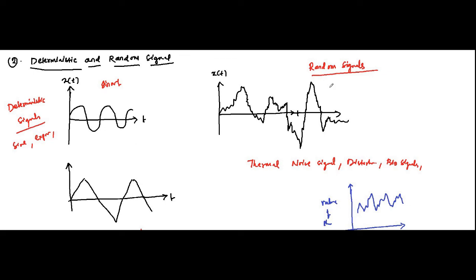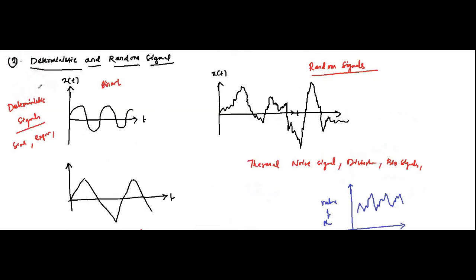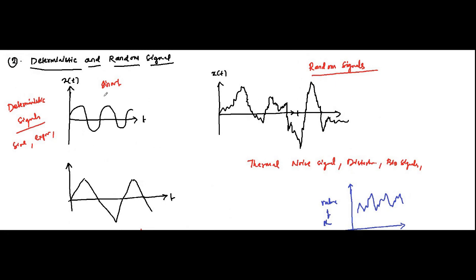Random signals are irregular in their behavior, have no fixed pattern, are uncertain in terms of their magnitude and phase, and their future behavior cannot be predicted. Deterministic signals are just the opposite. Most of the signals we will deal with in communication systems or in the study of signals and systems fall in the deterministic category, because we perform mathematical analysis on them to study them in a better way. This is the second classification of signals: deterministic and random signals.